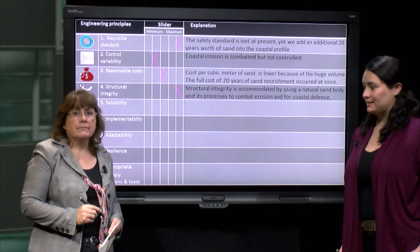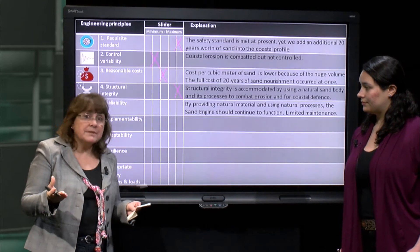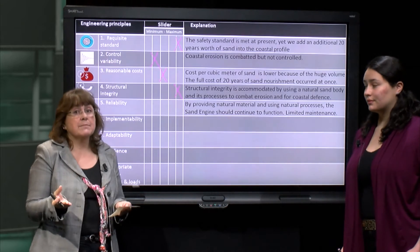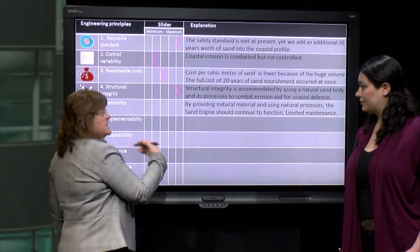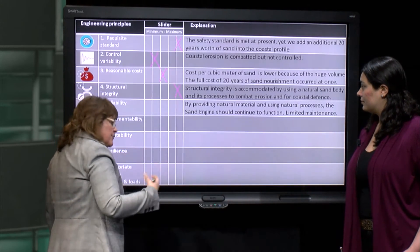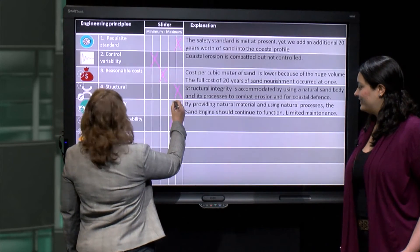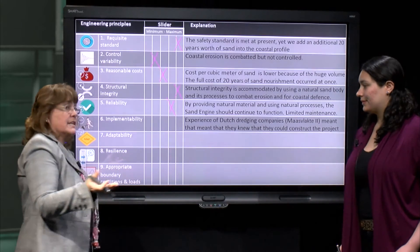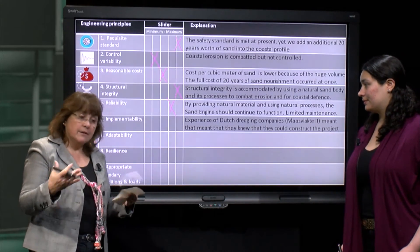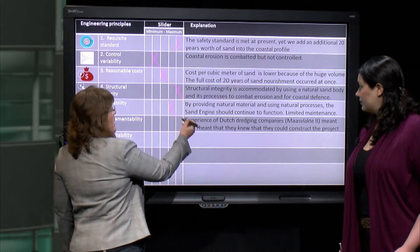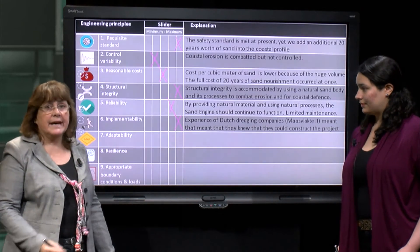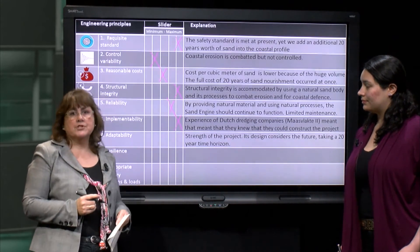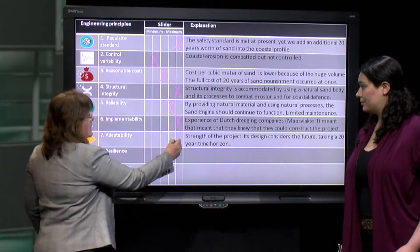Principle 5, reliability: this principle is addressed by the core concept of the design. By providing natural material and using natural processes, the sand engine should continue to function with limited maintenance — it might need some intervention if currents are too strong or the freshwater lake becomes blocked. Principle 6, implementability: the experience of the Dutch dredging companies in building the Maasvlakte II in Rotterdam Harbour meant they had the construction experience, so that scores very highly. Principle 7, adaptability: the design explicitly considers future needs, taking 20 years as its time horizon, so that also scores highly.